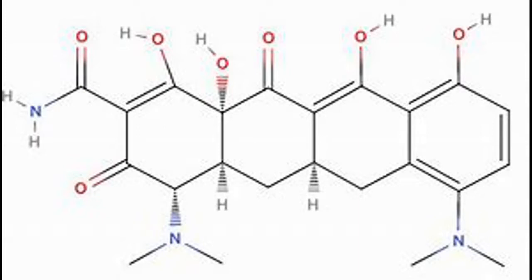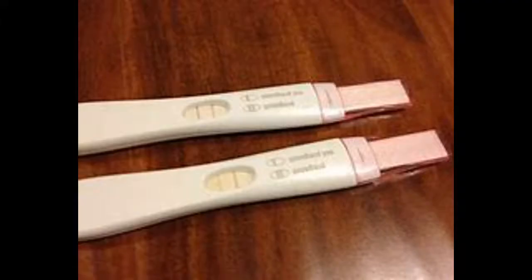Oral isotretinoin should only be used by doctors who are familiar with its adverse effects. Women at risk of pregnancy should use two methods of contraception for one month before taking the drug, while taking the drug, and at least one month after discontinuing it. Pregnancy tests before beginning therapy and at monthly intervals are recommended. After using it, acne may continue to improve. Most patients do not need a second course of treatment; however, retreatment is needed more often if the initial dose is low.